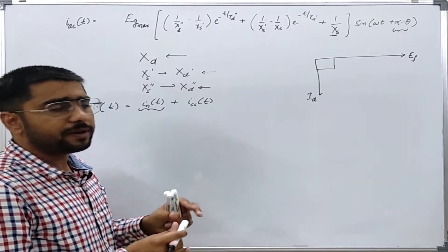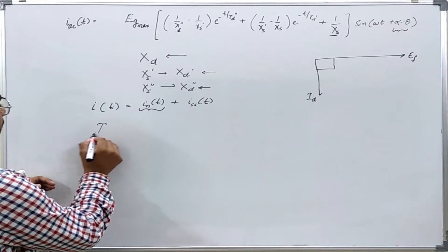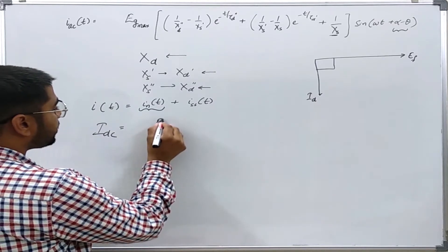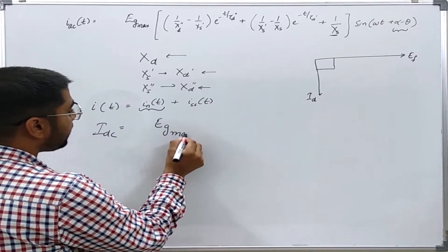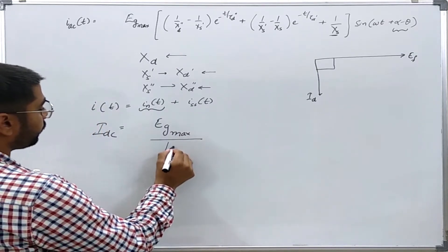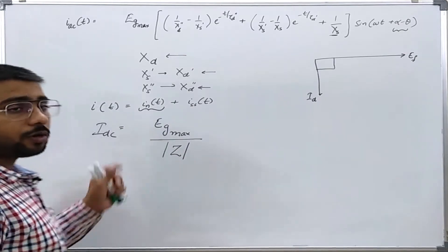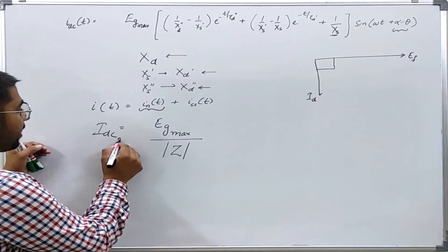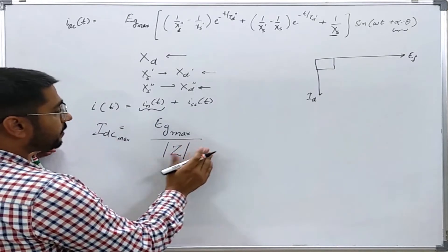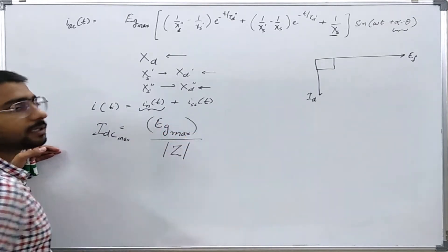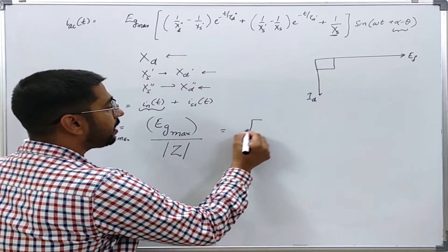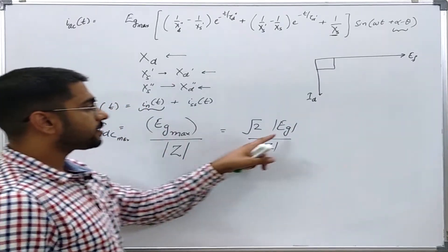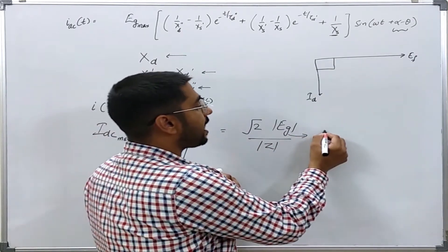We have seen in one of the previous lectures that this DC decaying part can have a value equal to the maximum value of the symmetrical part. This maximum value can go up to that peak value, and if I want to show only the RMS equivalent, I will write it as root 2 times IAC, where this symbol represents that we are dealing with RMS values. As I already mentioned at the start of this course, we will usually use RMS whenever we are dealing with phasors.